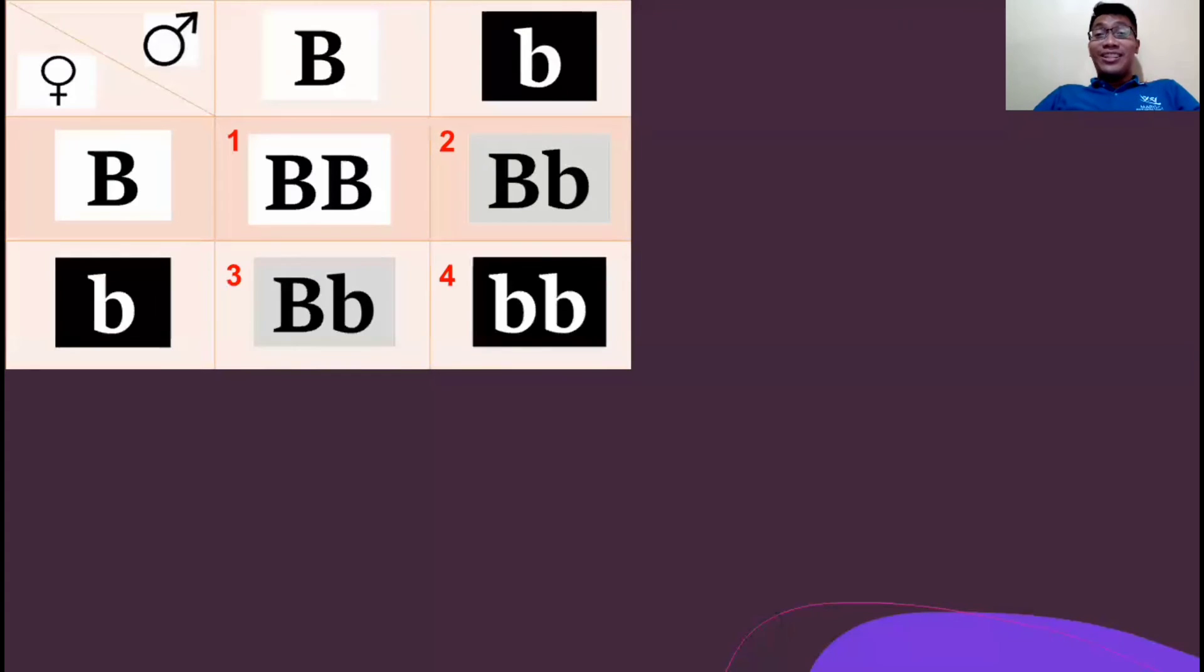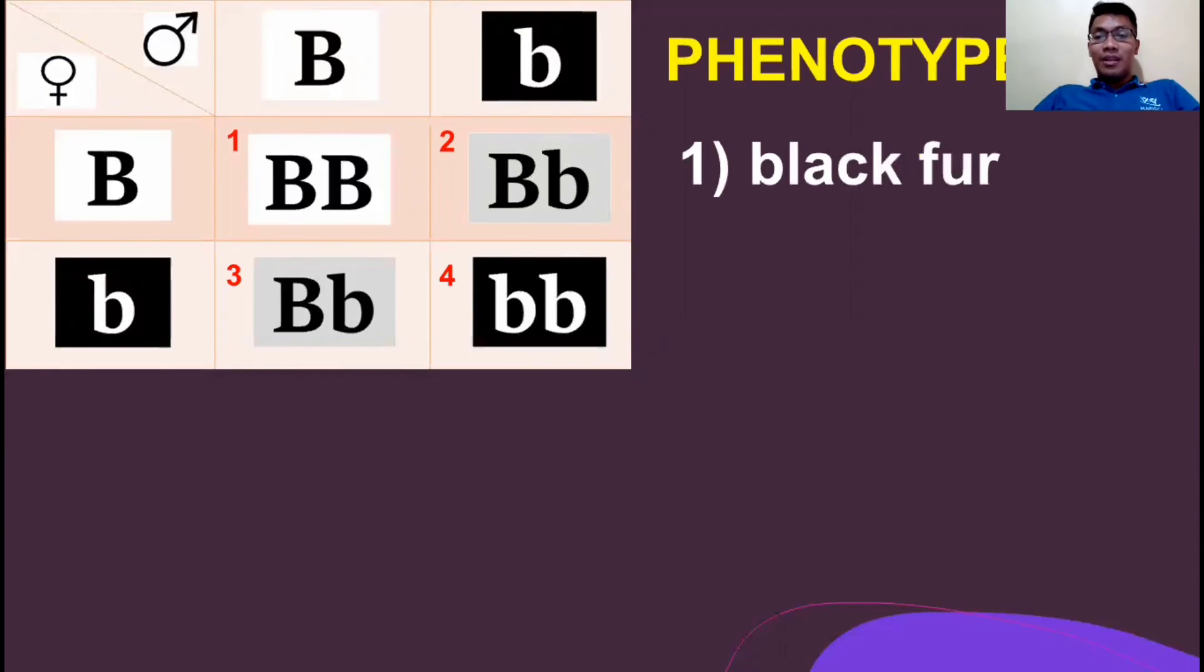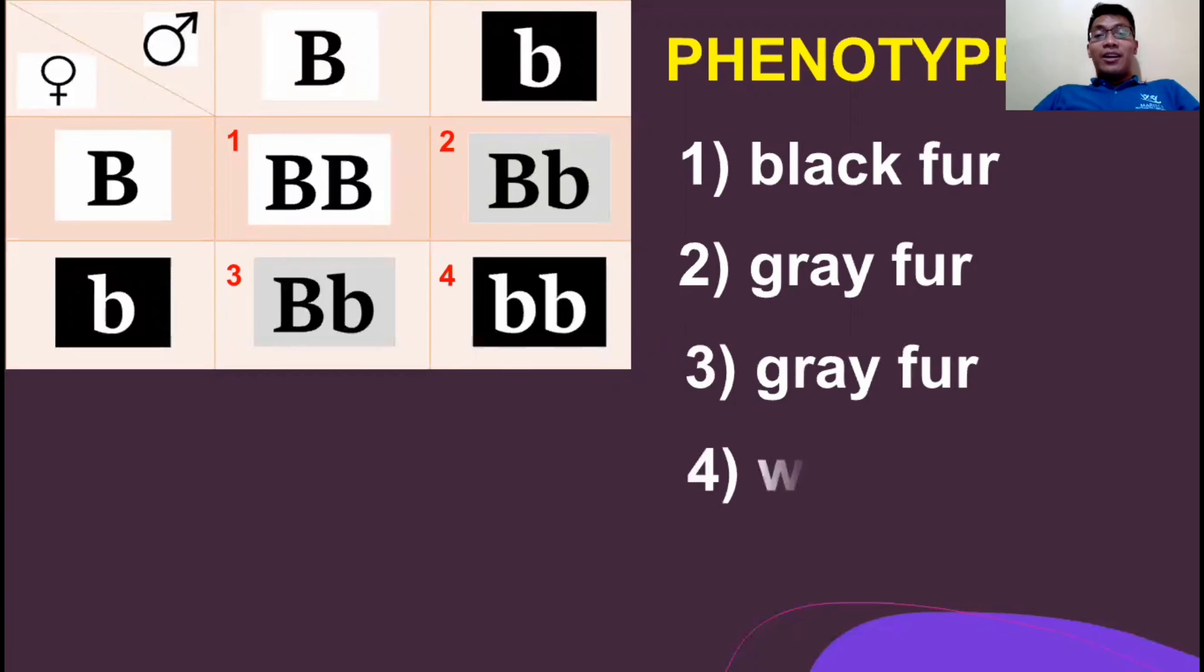Then let us now describe their phenotypes. One, since it is composed of two capital B, it means that it's a black fur. Two is grey fur. Three is another grey fur. Then four is a white fur.